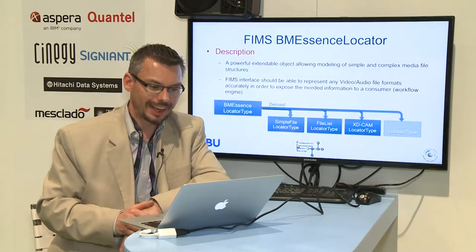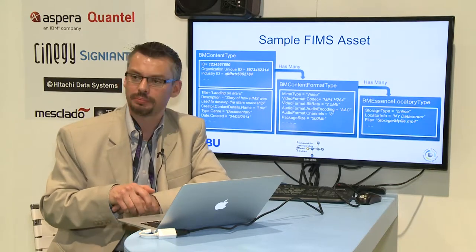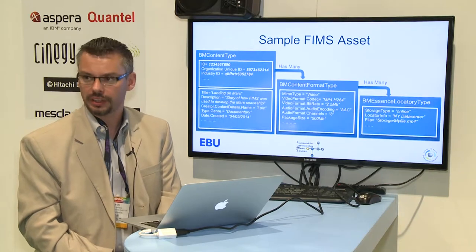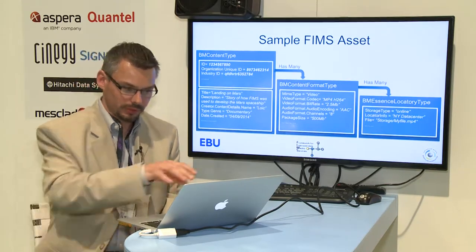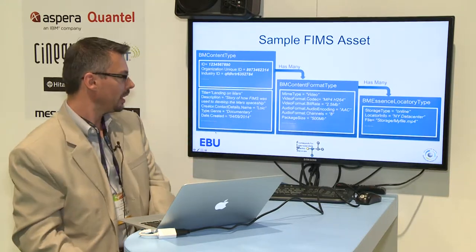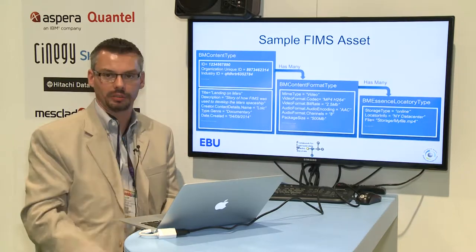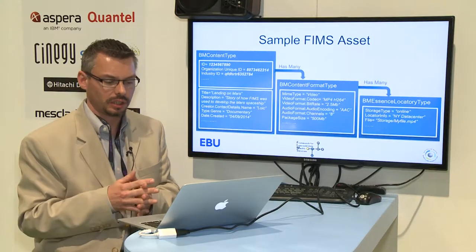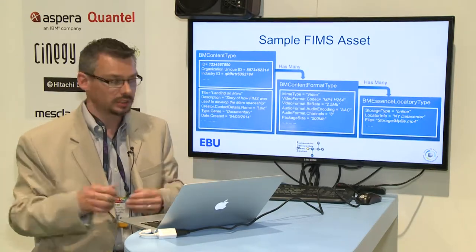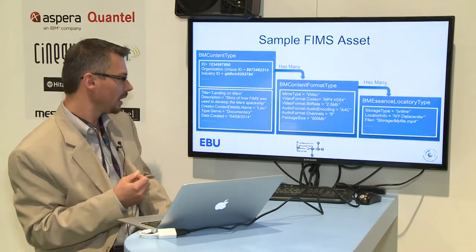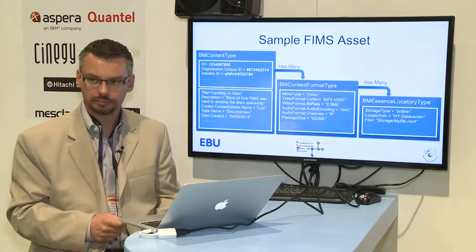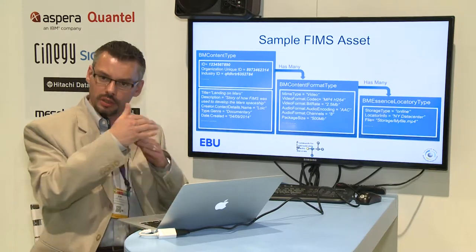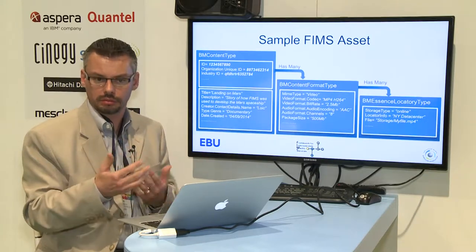As an example of a simple FIMS asset: putting data within the BM content type means there are identifiers at the BM content type level. You can support multiple IDs to represent the same content — it's extendable, so if each system generates its own IDs but you want to generate unique IDs across many repositories, you have the ability to plug that in directly. Then there's some metadata about the asset — editorial metadata — and a predefined structure lets you map the metadata from your existing systems to something well-structured within FIMS representing best practice in metadata management.